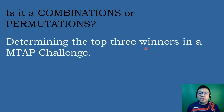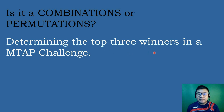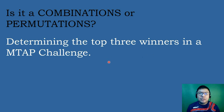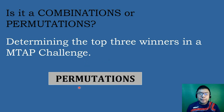Determine the top 3 winners in AM Top Challenge. In this case, since we are looking for the top 3 winners, meaning there is a 1st place, 2nd place, and 3rd place. Order is important or order matters. In permutations, order is important. Therefore, this situation illustrates permutations.